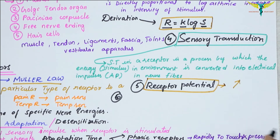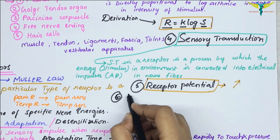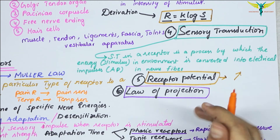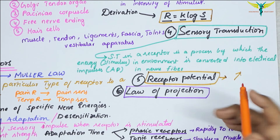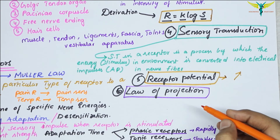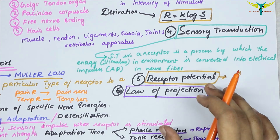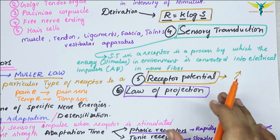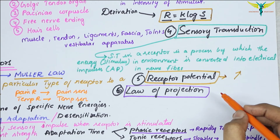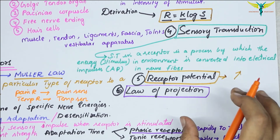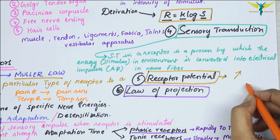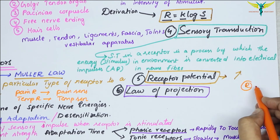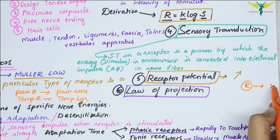The last property is the Law of Projection. When a sensory pathway from the receptor to the cerebral cortex is stimulated at any particular site along its course, the sensation caused by the stimulus is always felt at the location of the receptor, irrespective of the site that is stimulated.